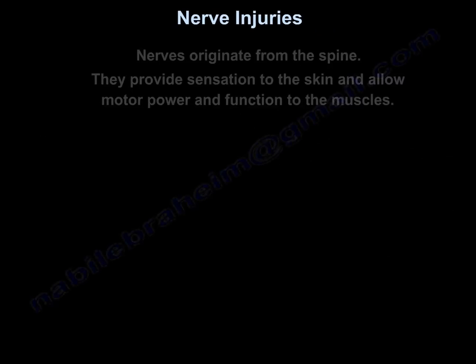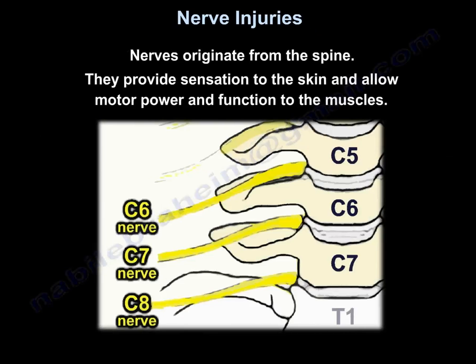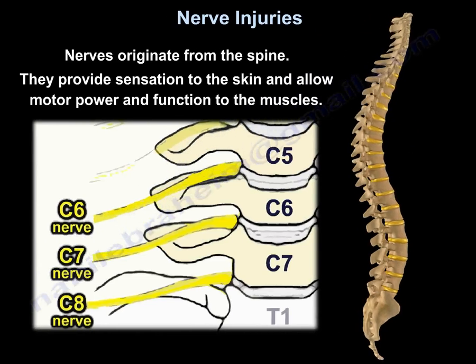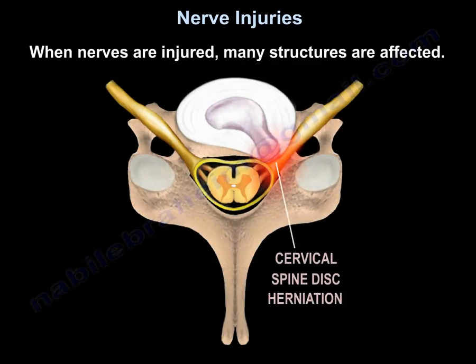Nerves originate from the spine. They provide sensation to the skin and allow motor power and function to the muscles. When nerves are injured, many structures are affected.